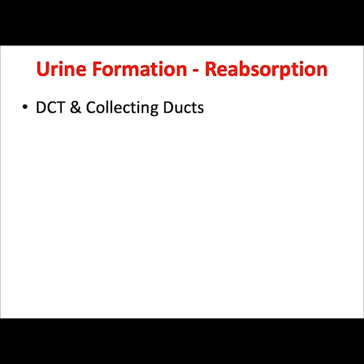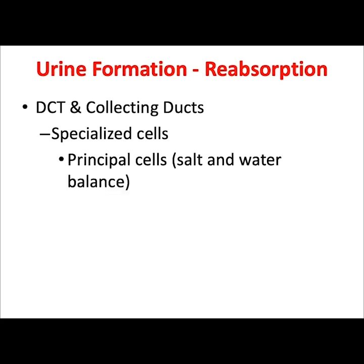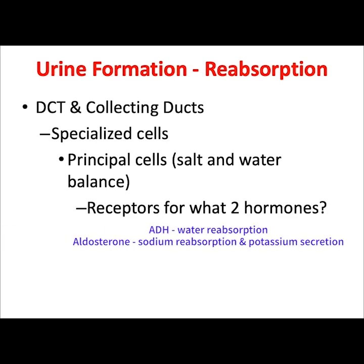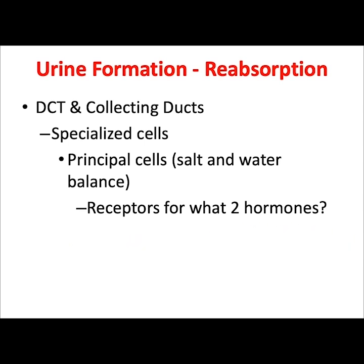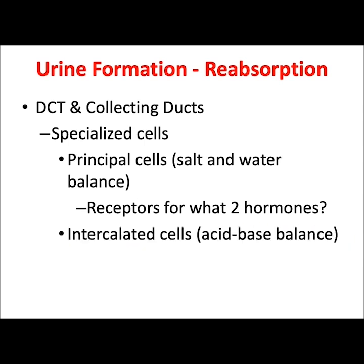Reabsorption occurring in the distal convoluted tubules and the collecting ducts involves specialized cells. Principal cells have receptors for hormones and are involved in salt and water balance. These include receptors for ADH (anti-diuretic hormone), which increases water reabsorption, and receptors for aldosterone, which increases sodium reabsorption and potassium secretion. A second type, called intercalated cells, are involved in acid-base balance, regulating hydrogen ions and bicarbonate ions in the blood.